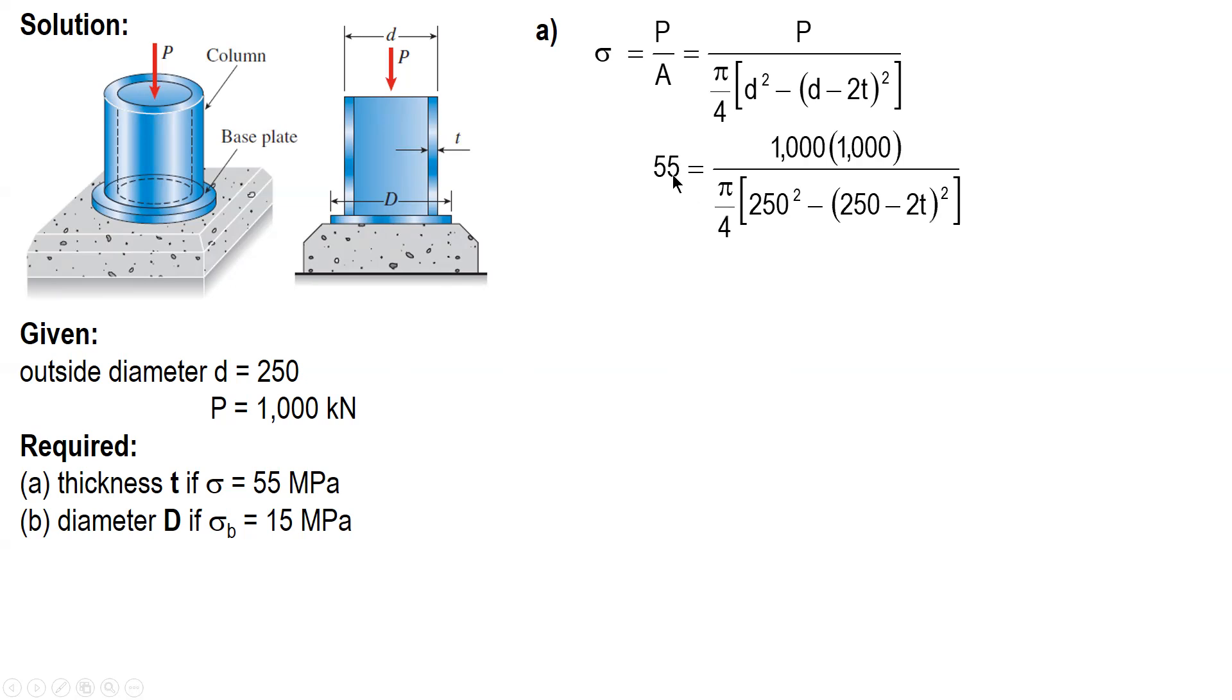We have this one: 55 MPa, 1,000 kilonewton times conversion factor kilonewtons to newtons. And then for the diameter 250 millimeters minus this one. So solving this using your calculator gives T equal to 25.816 millimeters.